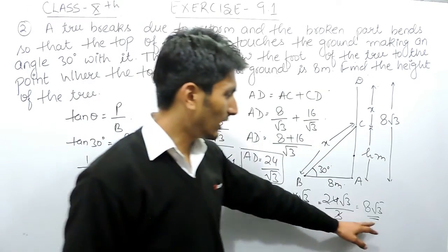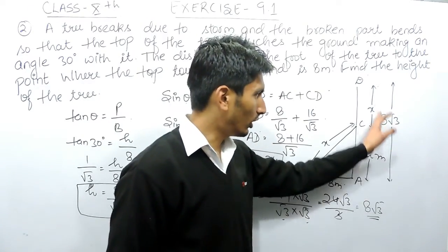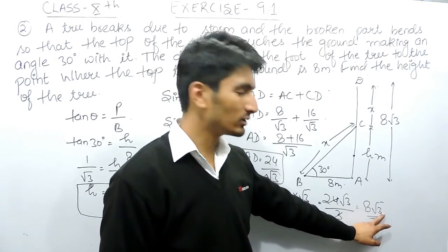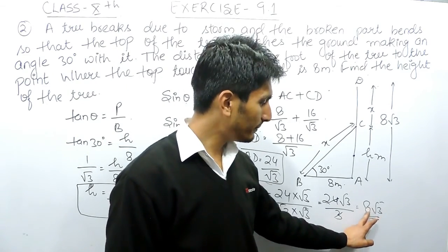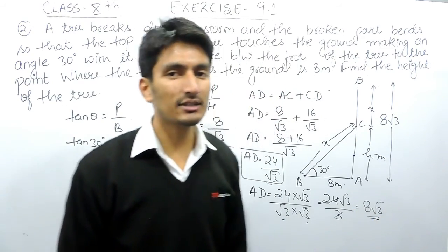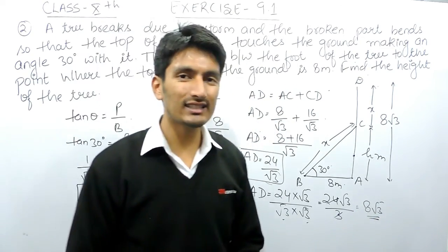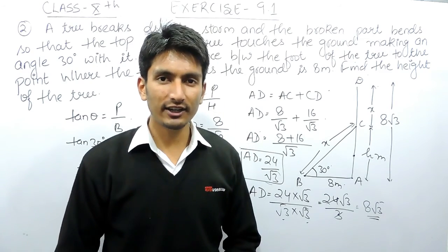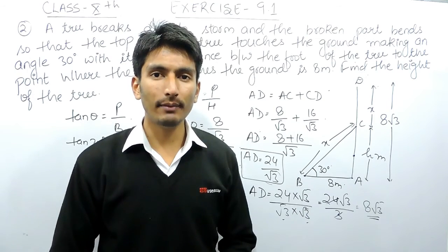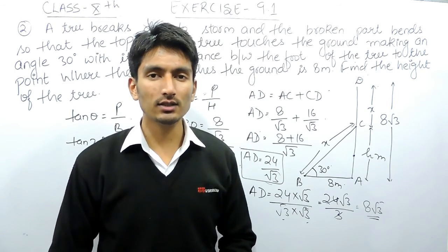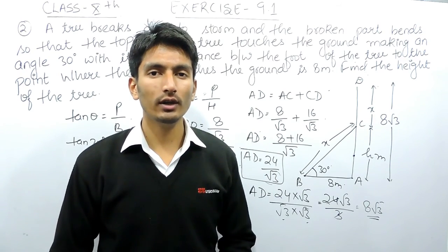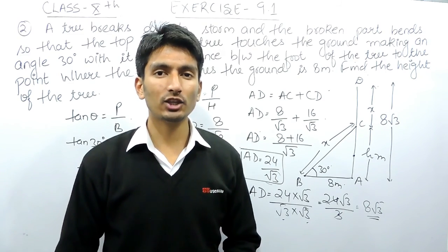That is how you solve this particular question. If you substitute the value of √3 as 1.73 and multiply 8 by 1.73, you will get the answer in decimals. If you like this video, please subscribe to our channel. If you have any problem in maths, you can directly contact us — the phone number, email address, and WhatsApp number are given in the description below. Thank you.